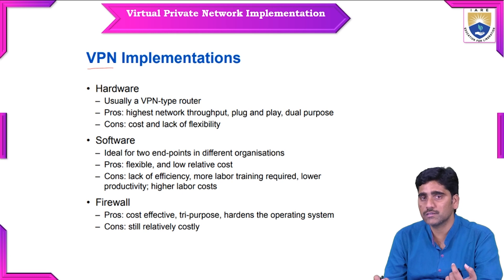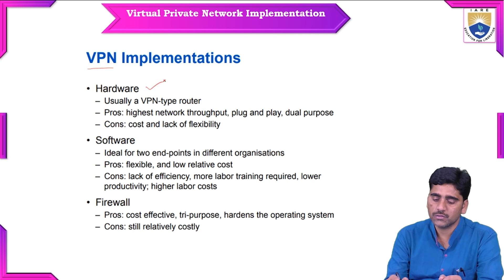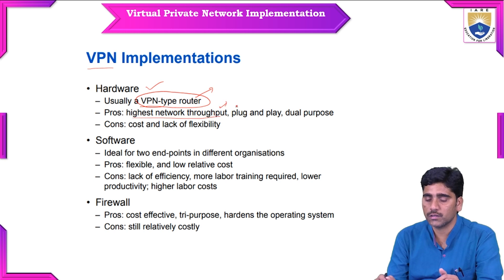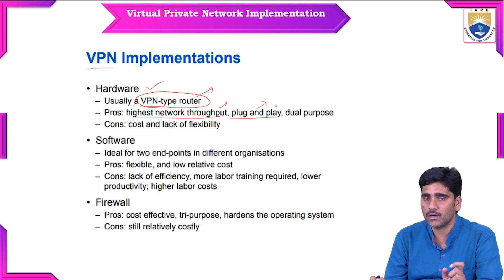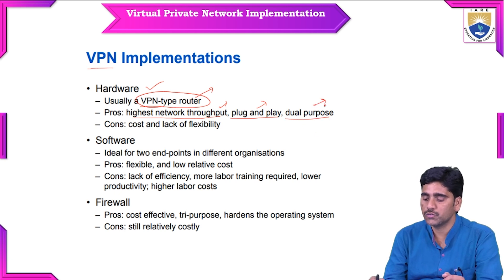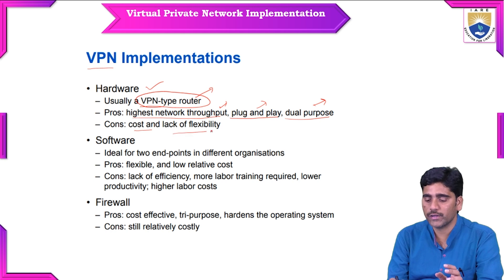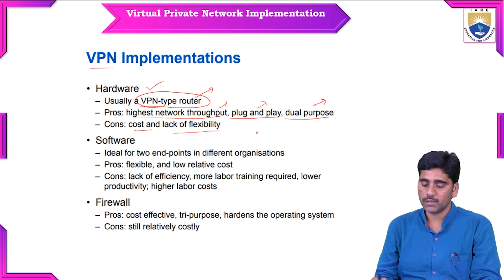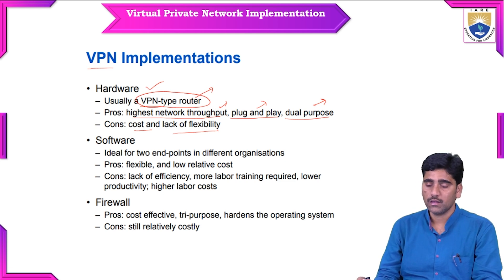To implement a Virtual Private Network, certain requirements are needed. The first hardware requirement is a VPN-type router. The advantages of this are highest network throughput, easy plug-and-play — meaning you can insert and remove from the plug easily — and dual purpose use. The consequences are cost and lack of flexibility.